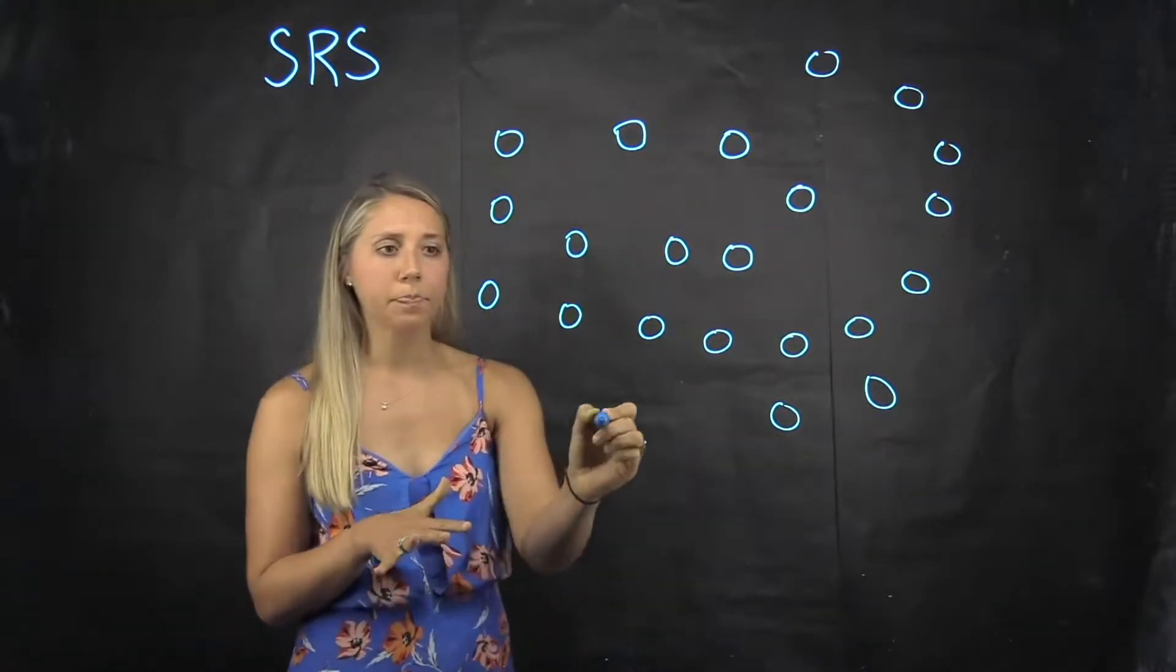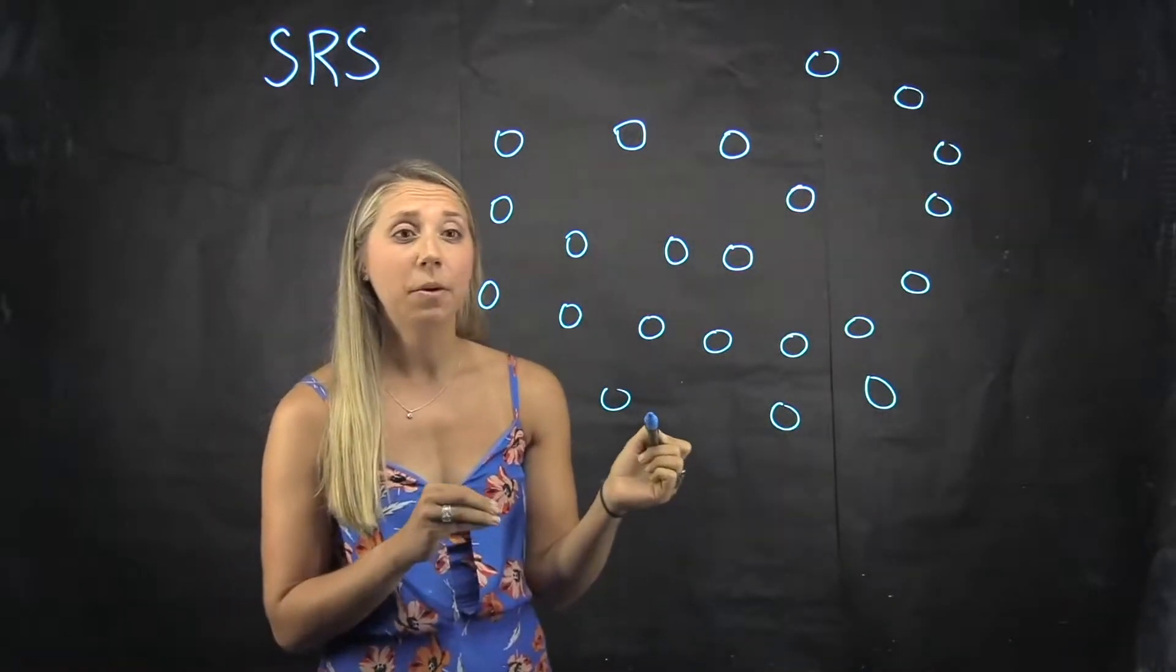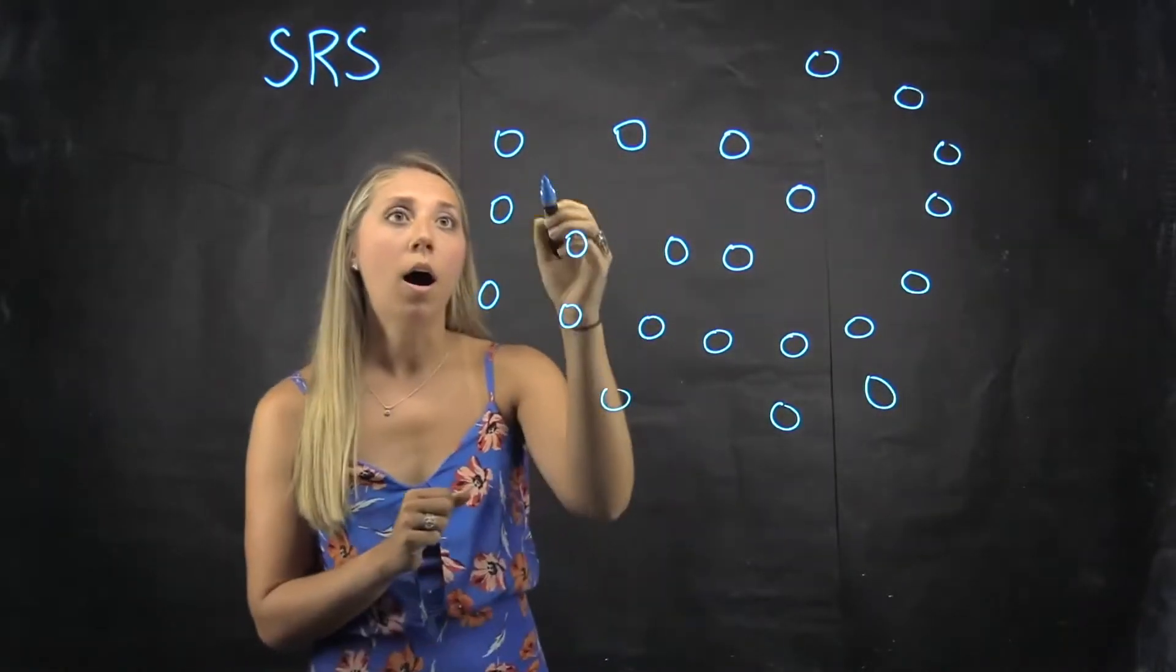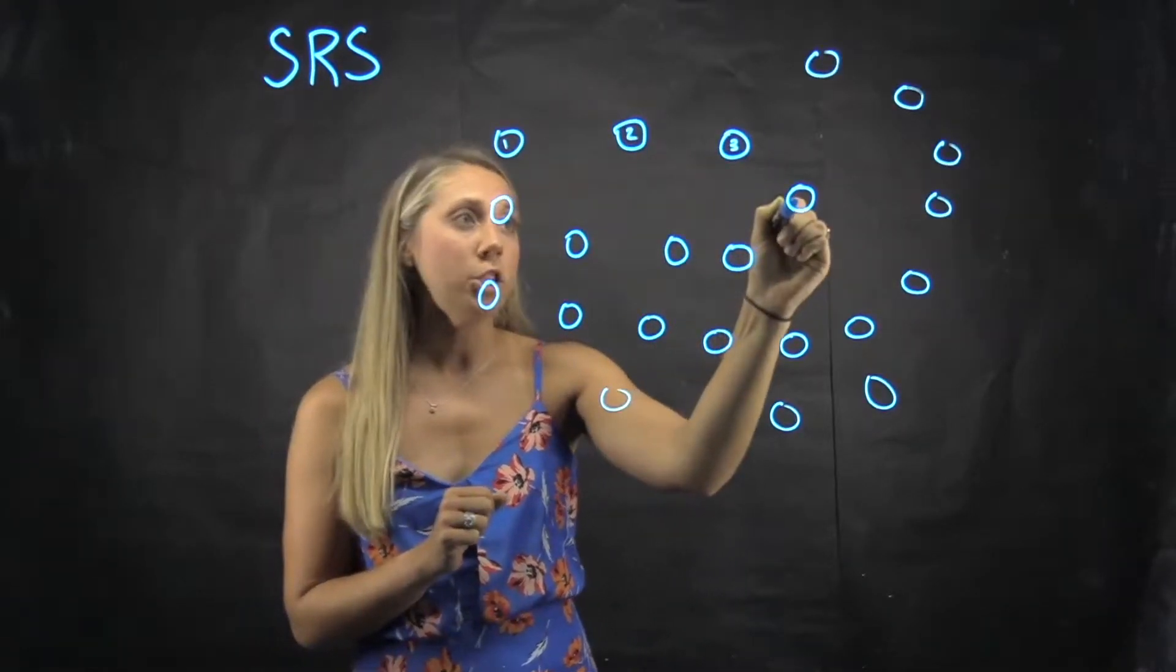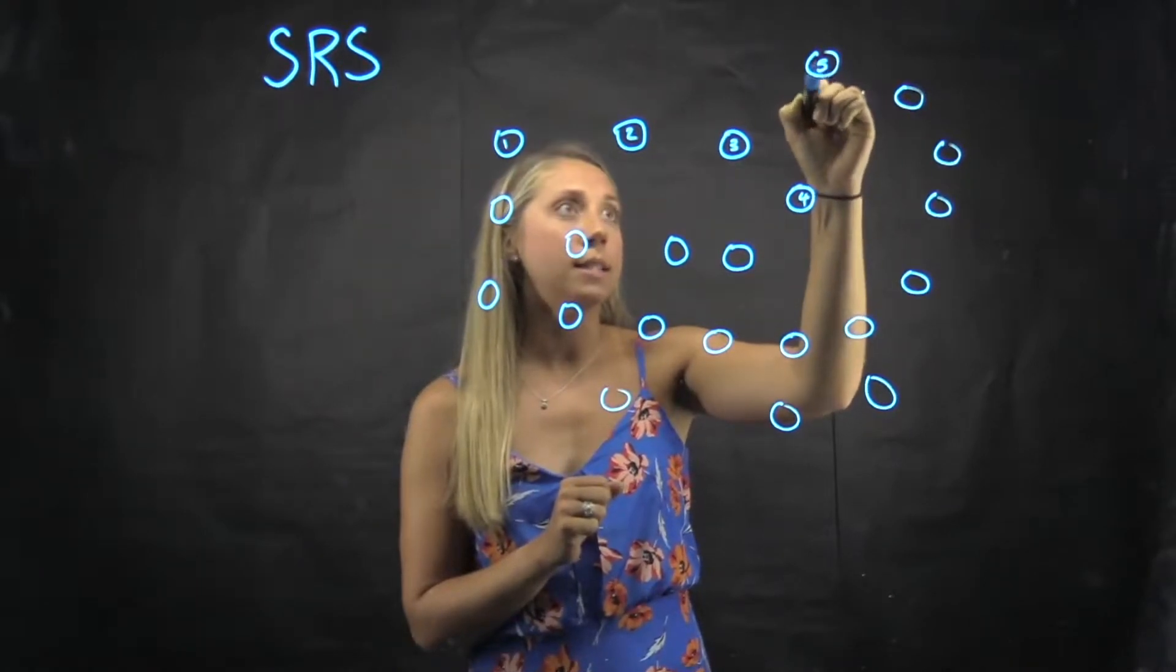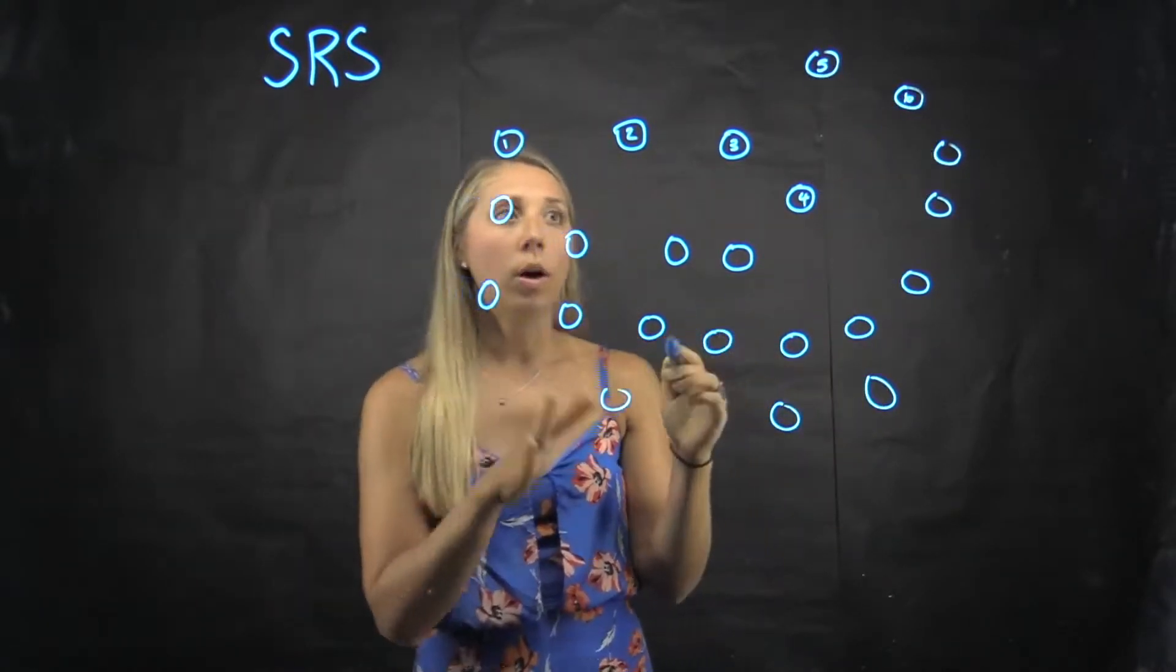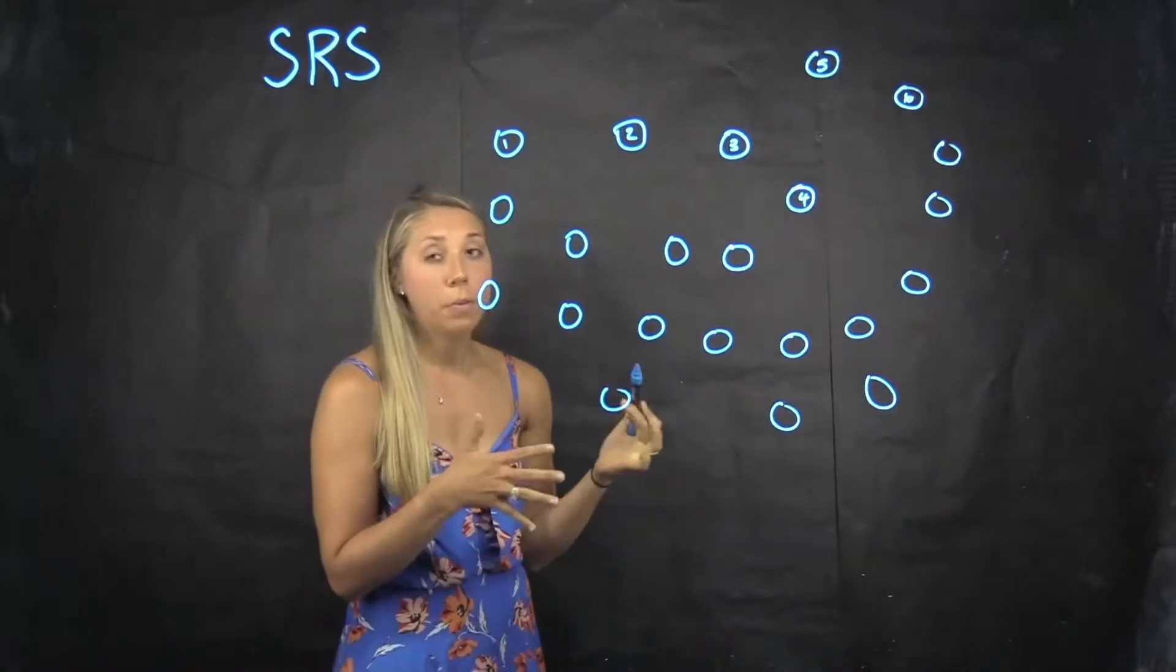The first thing in selecting a simple random sample is that we have to number all of our population. So if I were to number our entire population 1, 2, 3, 4, 5, 6, all the way to 600-some, they would all have a number.